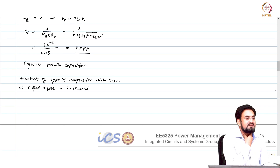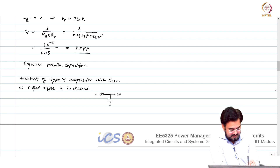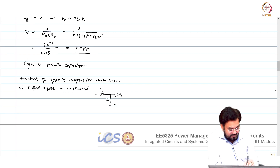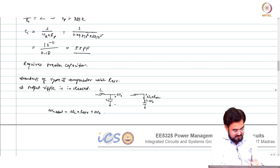The output ripple is increased. Why is it increased? So, delta V_out ripple: what will this be? Delta I_L into R_ESR. So delta V_out total will become delta I_L into R_ESR plus additional terms.